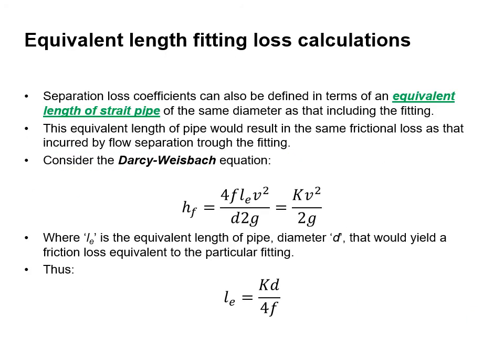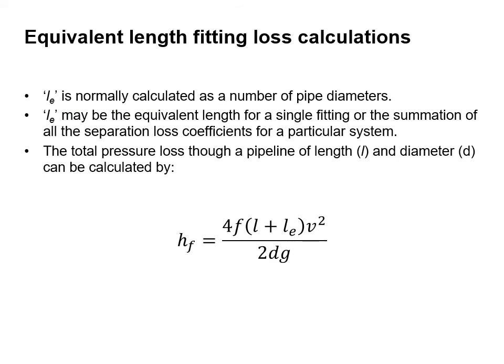Separation loss coefficients can also be defined in terms of an equivalent length of straight pipe of the same diameter as that including the fitting. This equivalent length of pipe would result in the same frictional loss as that incurred by flow separation through the fitting. Using the Darcy-Weisbach equation, l subscript e equals k times d divided by 4f. The equivalent length is normally calculated as a number of pipe diameters. The total pressure loss through a pipeline of length l and diameter d can be calculated by summing the separation loss coefficients across all fittings.